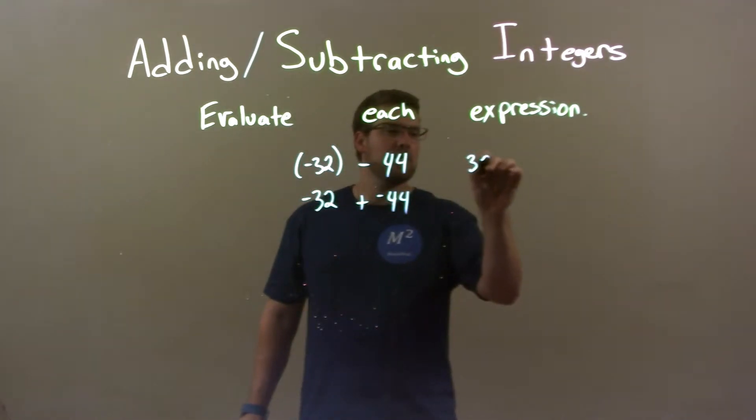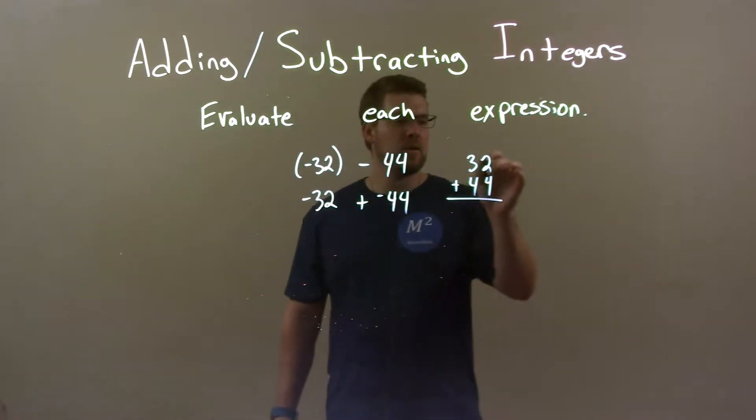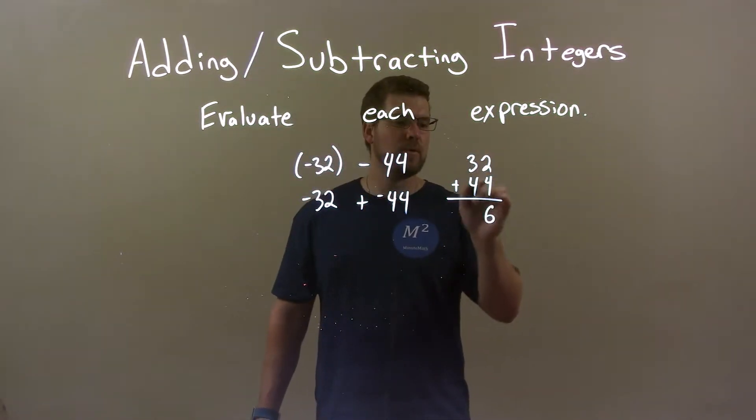So we have 32 and 44. Let's add them together, and we'll put the negative sign at the end. 2 plus 4 is 6, 3 plus 4 is 7.